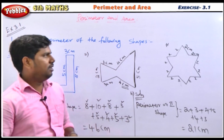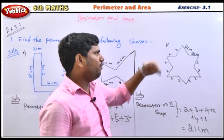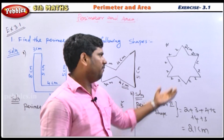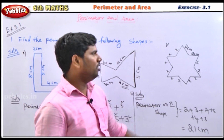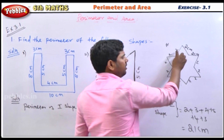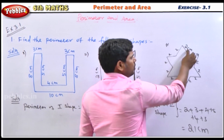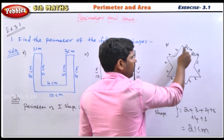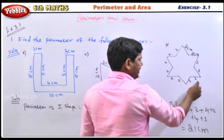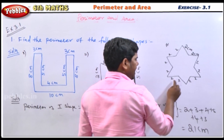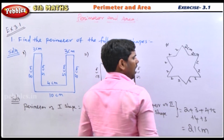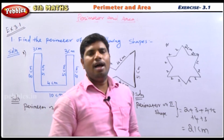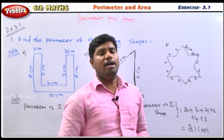Now the fourth shape. The perimeter of the fourth shape is equal to each side. Counting the sides: 1, 2, 3, 4, 5, 6, 7, 8, 9, 10, 11, 12 — there are 12 sides, each of length 2. So 2 times 12 equals 24. Therefore, the perimeter of the fourth shape is 24 centimeters.